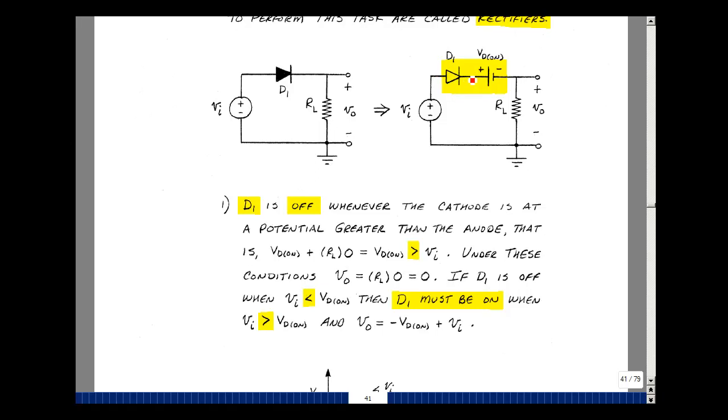Looking to get the cathode at a greater potential than the anode. What's the potential at the cathode? Well it's going to be this drop plus this drop. No current flowing so we have Vd on plus zero times R sub l. That's this equation right here and it's just equal to Vd on. And what's the anode? Well it's just equal to V sub i. When the cathode is greater than the anode, the diode is off and under these conditions the output voltage is equal to zero current times R sub l or just zero. The diode's off when V sub i is less than Vd on then it must be on when the inequality is the other way. There's only two possible states for the diode.